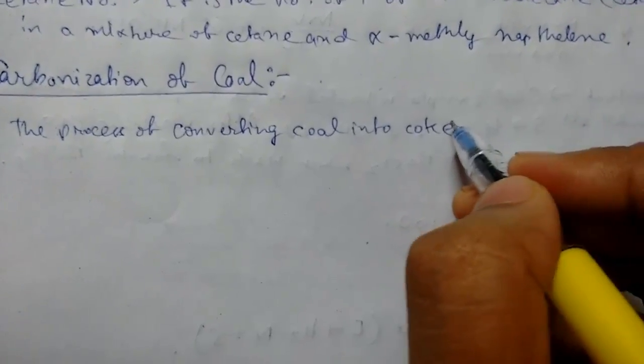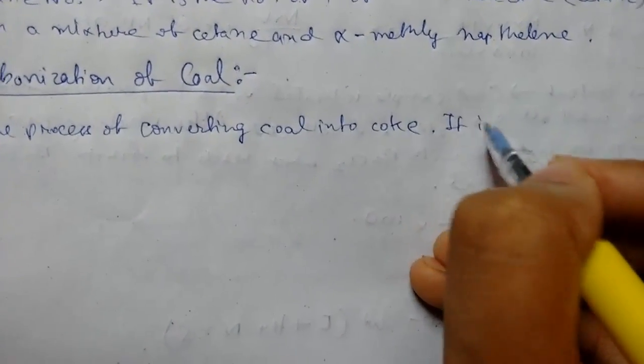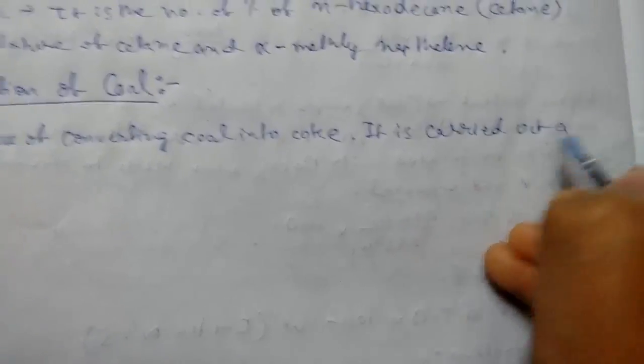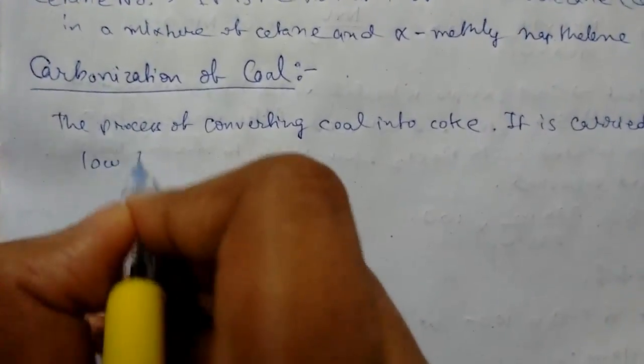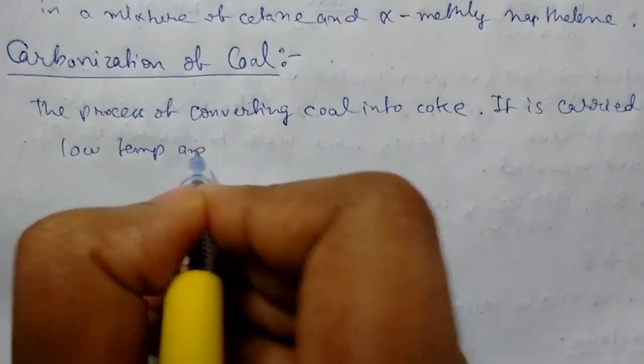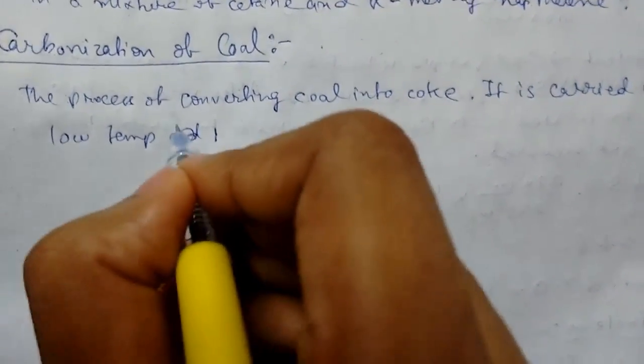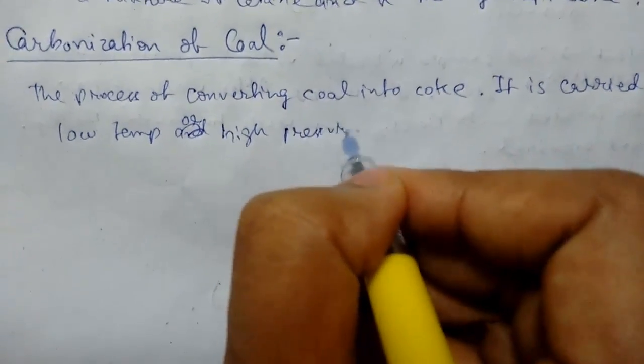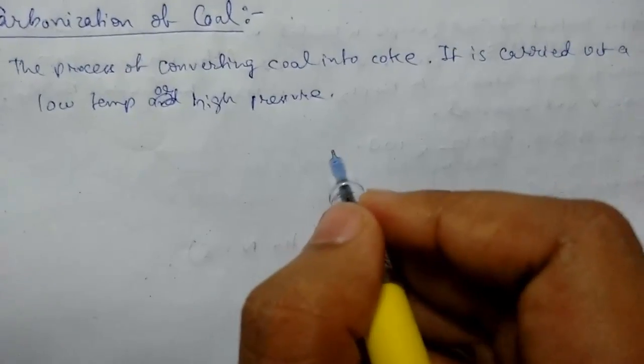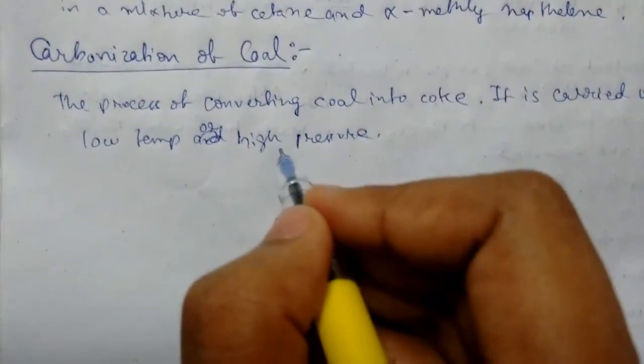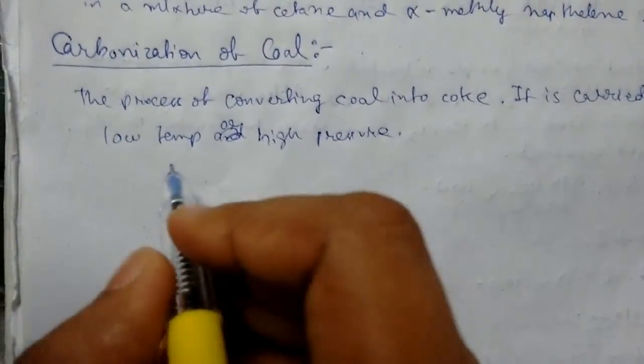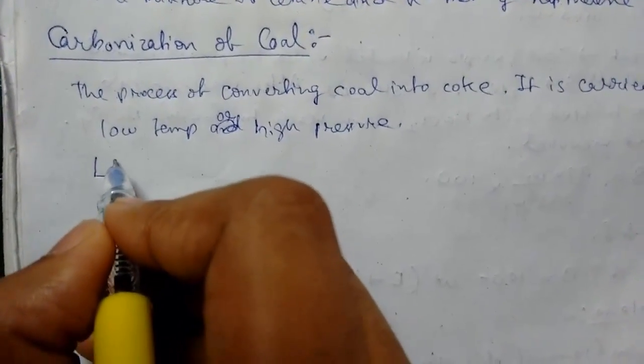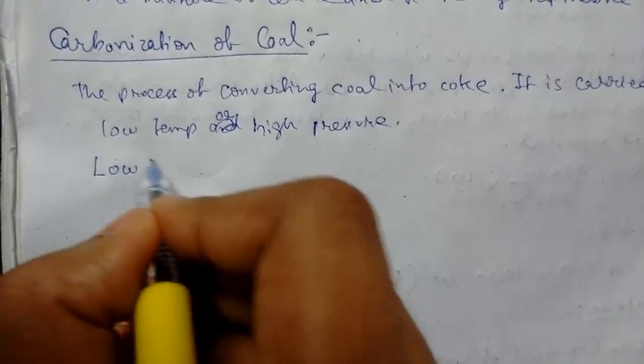It is carried out at low temperature and high pressure, or both cases. If low temperature, then it is known as low temperature carbonization. For high pressure, it is known as high temperature carbonization. So there are two parts of carbonization: low temperature carbonization.